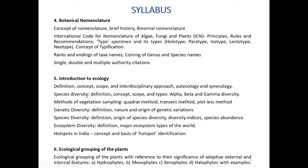Under ecology we will also study species diversity — its definition, concept, scope and types — alpha, beta and gamma diversity; methods of vegetation sampling including the quadrat method, transect method, and plotless method; and genetic diversity — its definition, nature and origin of genetic variations.